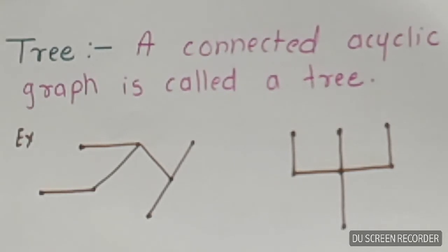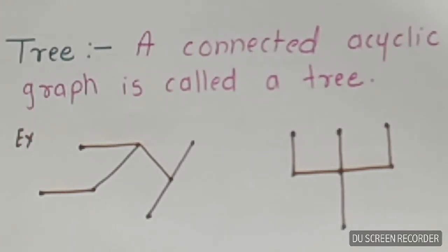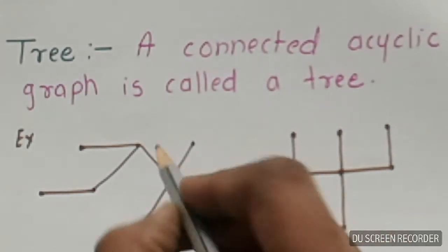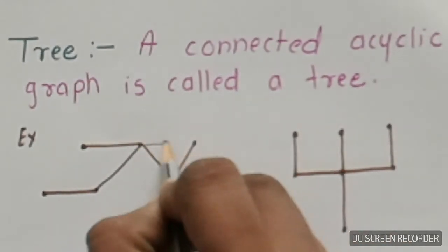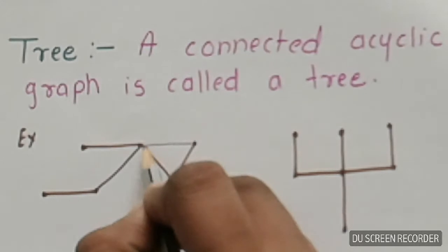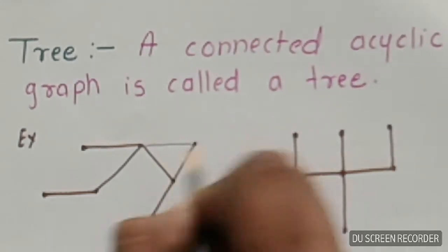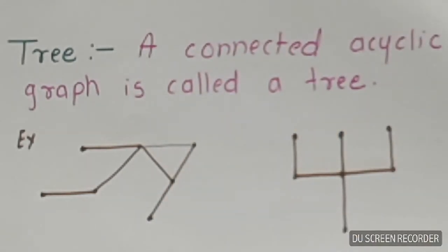Tree. A connected acyclic graph is called a tree. These are some examples of a tree. In these graphs there is no cycle, so these are trees. Now, what is a cycle? If we draw an edge here, we will get a closed shape, which is a cycle. So if there is any cycle in a graph, then that graph is not a tree.